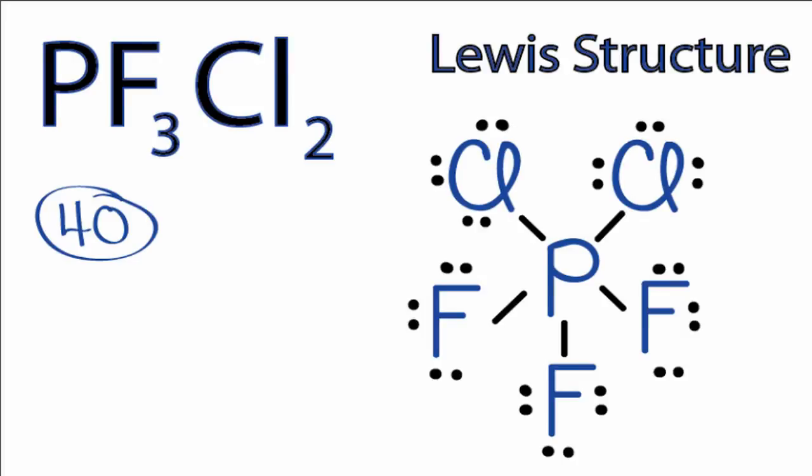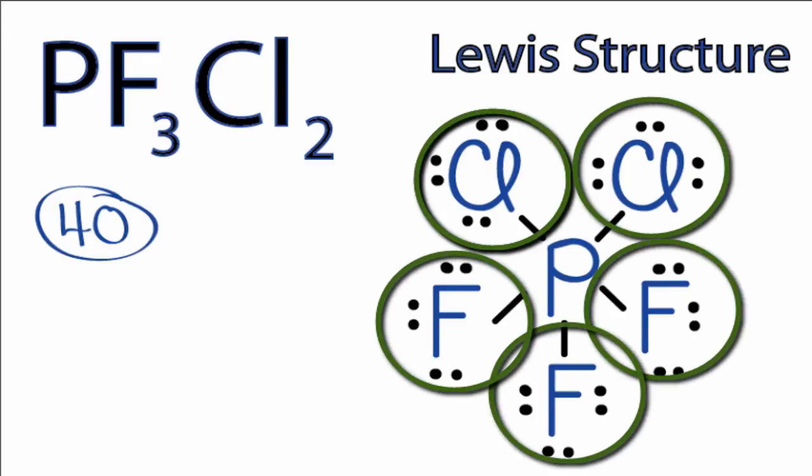So at this point, we've used all 40 valence electrons for the PF3Cl2 Lewis structure. Each of the atoms on the outside, the chlorines and the fluorines, they have 8 valence electrons, so their octets are satisfied.